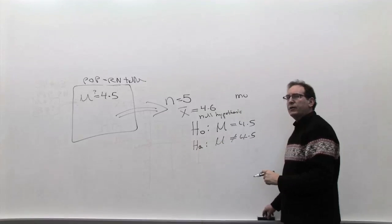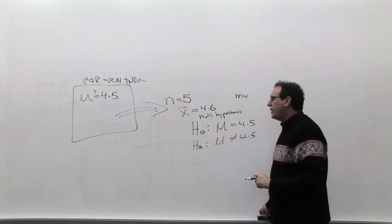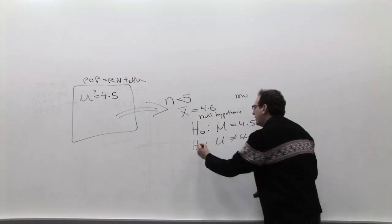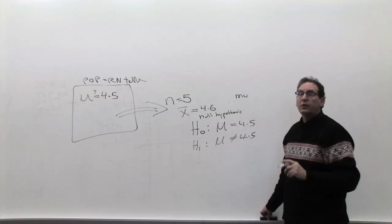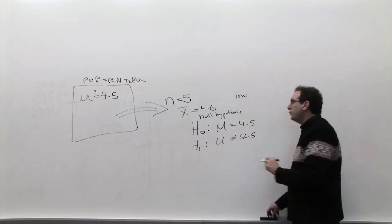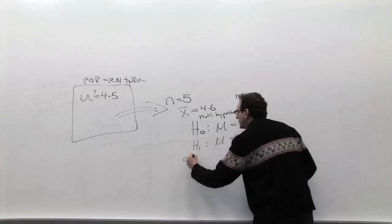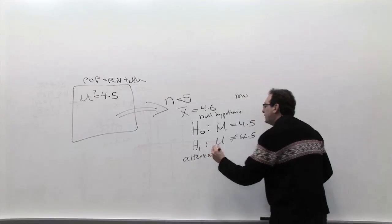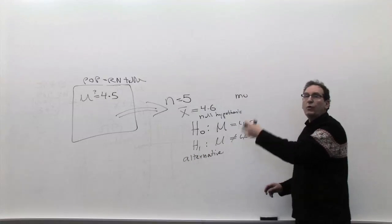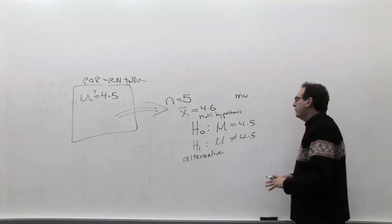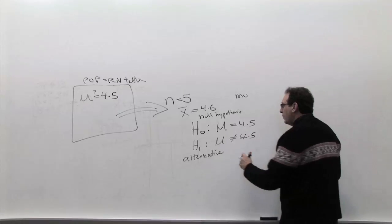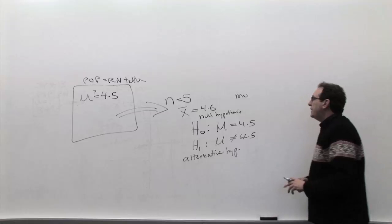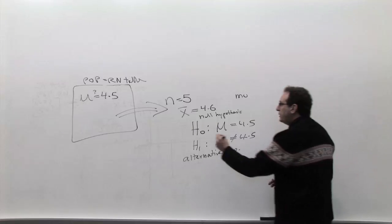By the way, I called it HA, but our book calls it H1. H1 is more traditional, though some books call it HA — it stands for the alternative hypothesis. In more advanced statistics, you get H2, H3. For now, H0 and H1 is what we're working with, and we're testing one versus the other — simply a debate between two points of view about which one is right.